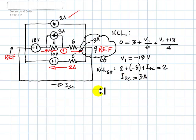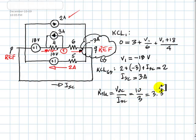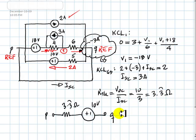Our Thevenin is V open circuit divided by the short circuit current, 10 volts divided by 3 amps, 3.333 ohms. And this is the Thevenin equivalent of that circuit at the port PQ. Thank you very much.